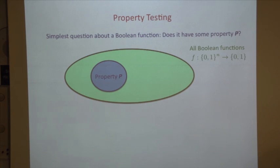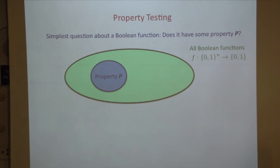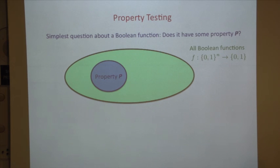This is a talk about property testing. To recall the basic framework, this talk is about property testing of Boolean functions. There's some n-bit function that takes n-bit strings and outputs single bits. Property testing is about the simplest kind of questions you could ask about a Boolean function: does it have some property or not? Just a yes-no question.